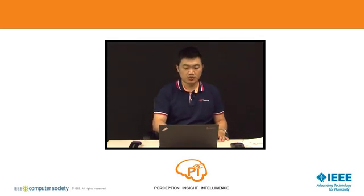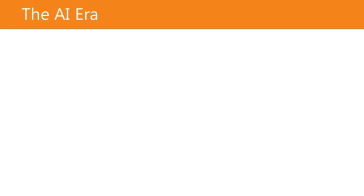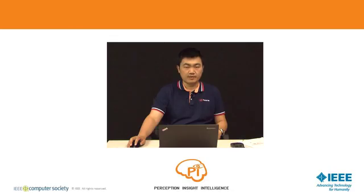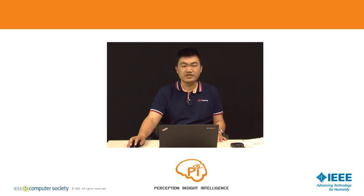Let's start with module one. In module one we do an overview of the technology. Before we go into detail of the technology itself, let's go back in history and understand how we entered the AI era. There's a computer history museum in Mountain View right next to Google Campus that gives you a very good overview of the technology development in Silicon Valley. Let's go over it and see if we can find some inspiration and motivation from there.